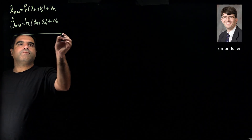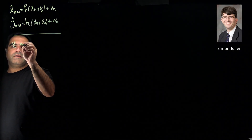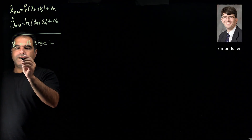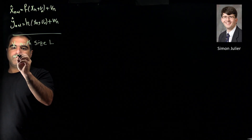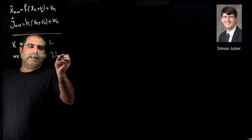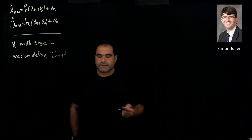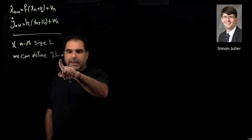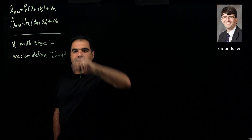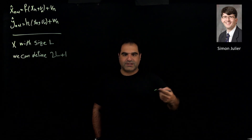Julier said that if you have a state vector x with size l, we can define 2l plus 1 auxiliary points, which we call sigma points. We then propagate these sigma points into the transition and measurement function to calculate the mean and variance of the predicted states and predicted output.